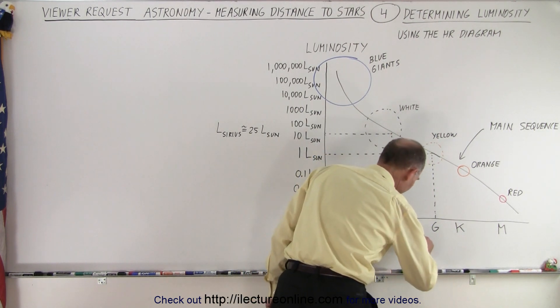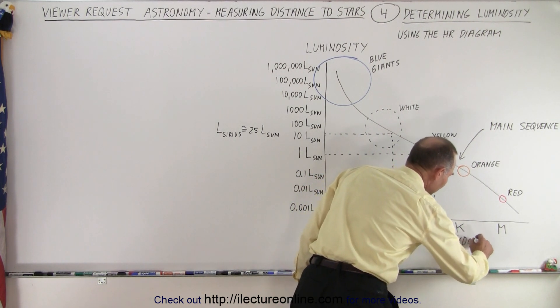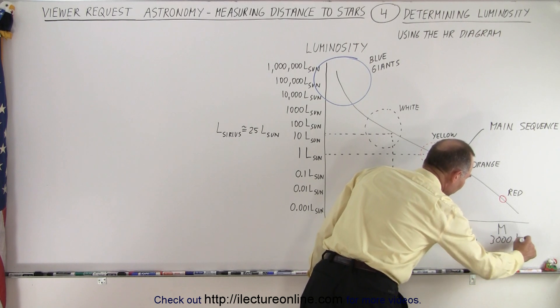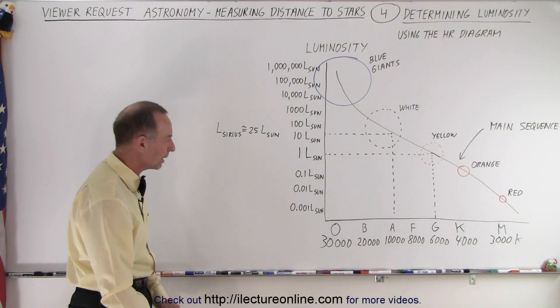For F it's about maybe 8,000 Kelvin. About 6,000 for G. About 4,000 for K. And about 3,000 for M. So this is the temperature in Kelvin of these types of stars. And there's of course a little wiggle room in there.